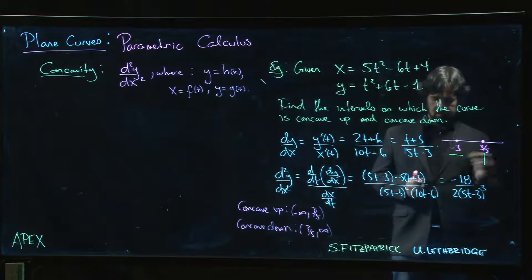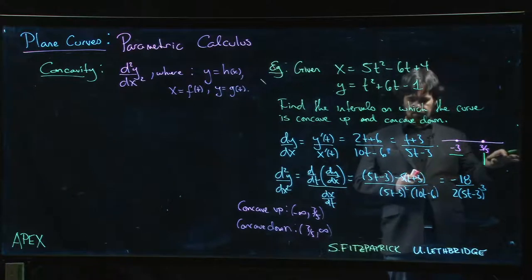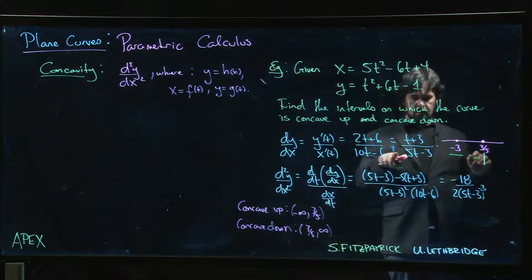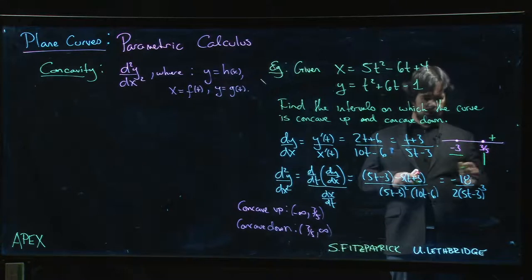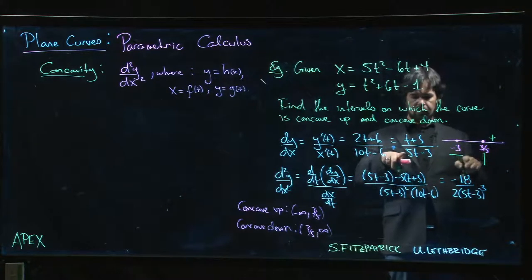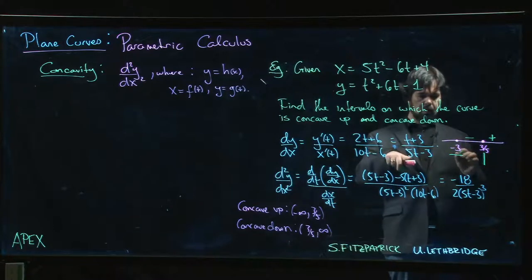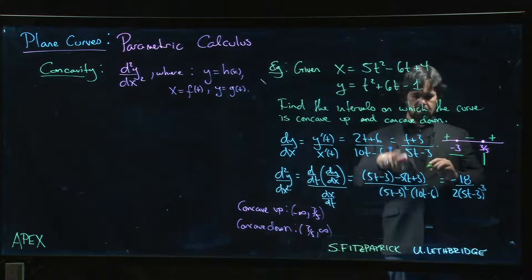If t is bigger than 3/5, everything is positive. If t is less than 3/5, the denominator is negative, the numerator will remain positive in this interval. So we have negative below -3, and top and bottom are both negative.